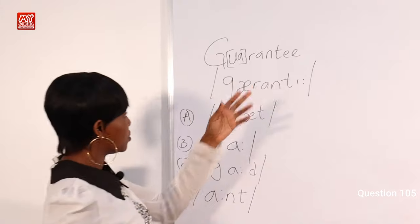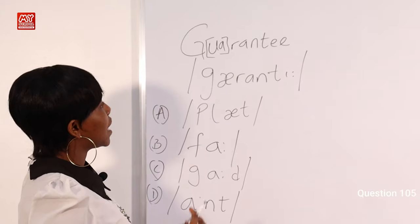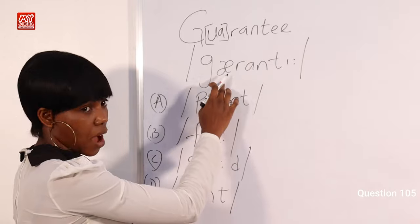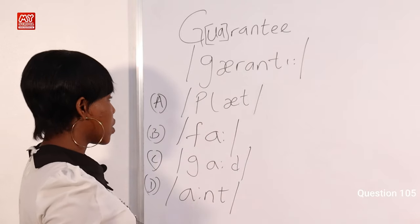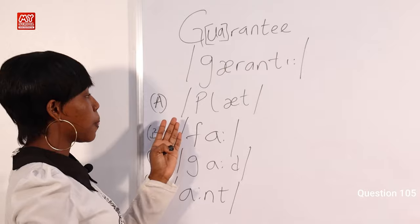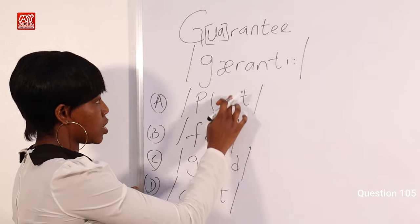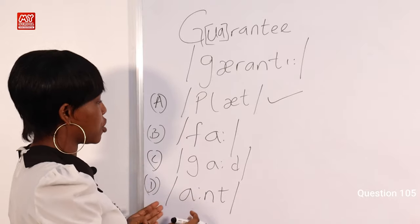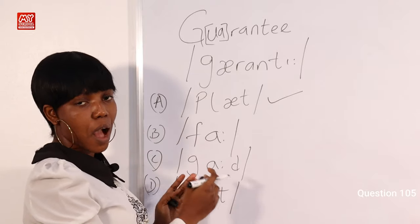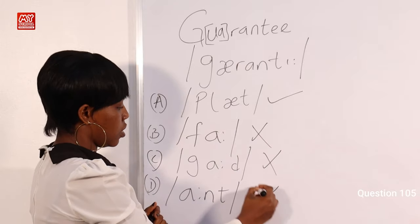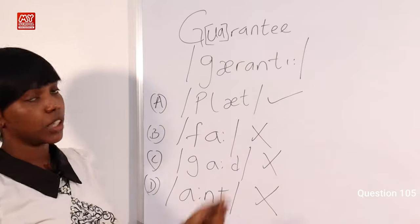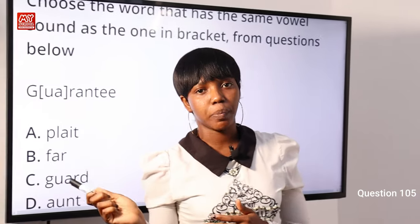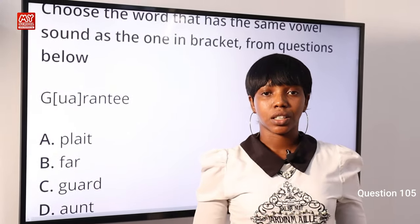The word 'guarantee' with the letters 'ua' is articulated as a short vowel sound. Looking at the options — A) plat, B) far, C) guard, D) aren't — option A has the same short sound as in 'guarantee,' while the other options represent the long R sound. Option A) plat is the correct answer.